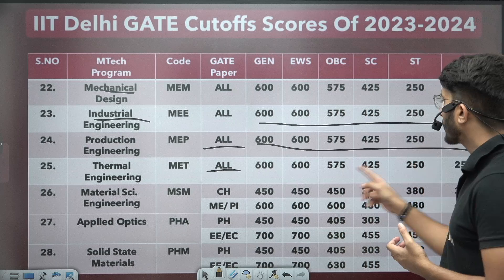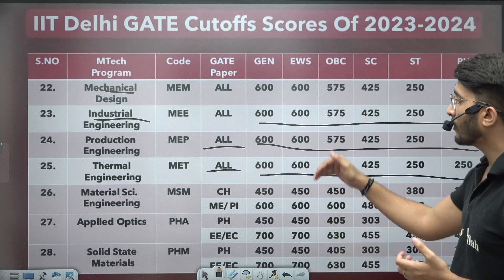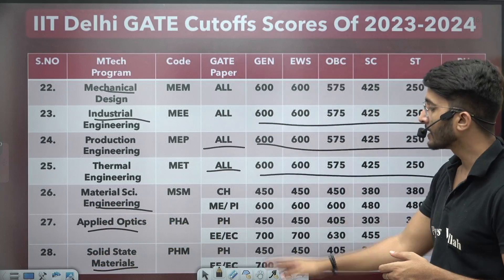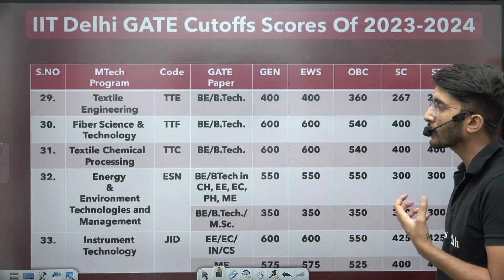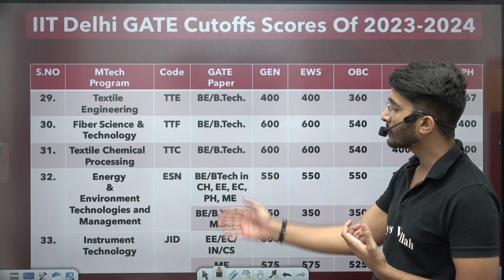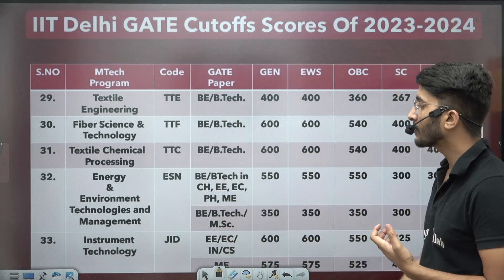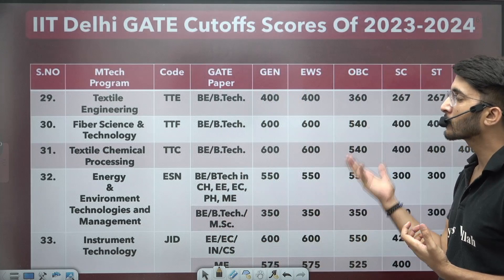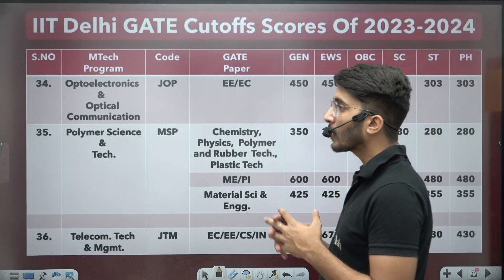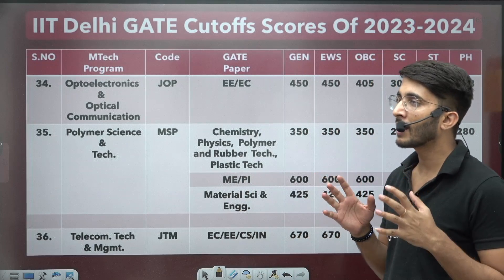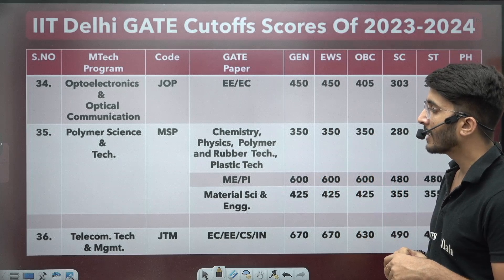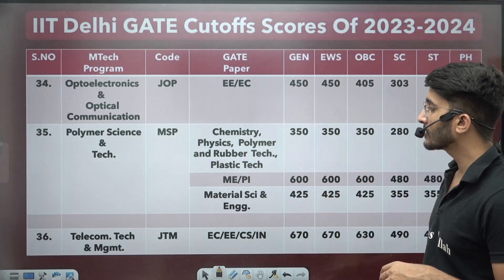Production Engineering and Thermal Engineering are also top core courses of mechanical engineering for masters. For Material Science Engineering, Applied Optics, and Solid State Materials, cutoff marks are also available. For Textile and Fiber Textile Chemical Processing, Energy, Environment and Technology — some interdisciplinary courses are available and whatever cutoff marks are required to be selected in IITs are mentioned. If you are targeting GATE for 2025-26, you need at least these marks.